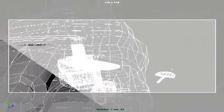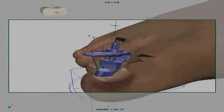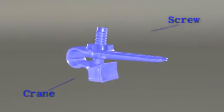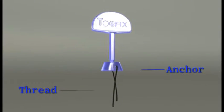Now you are about to watch a simulation of the patent. The parts of ToeFix are crane and screw, anchor and thread.